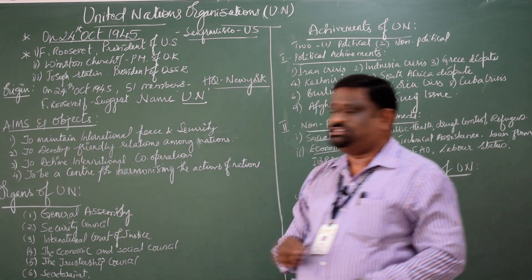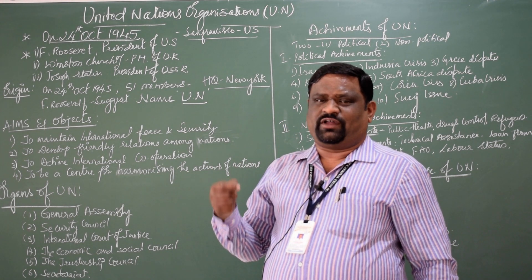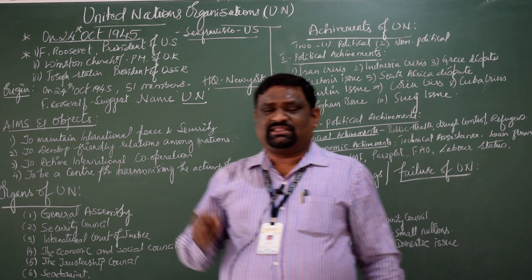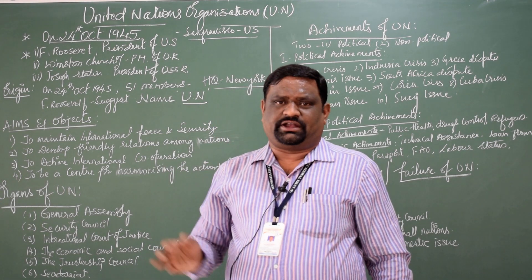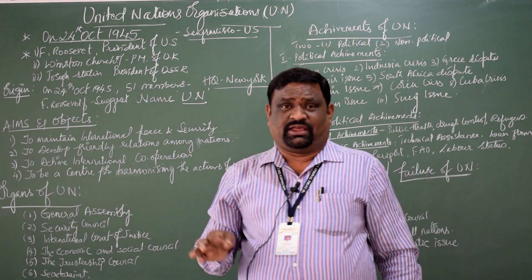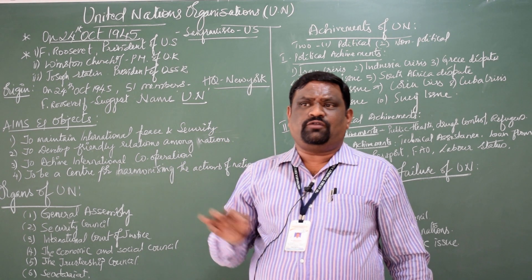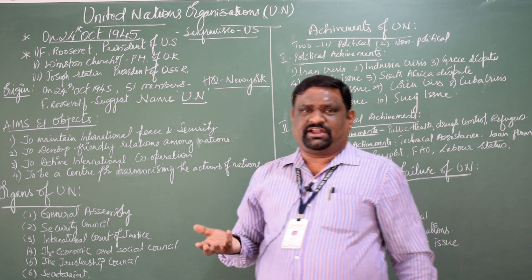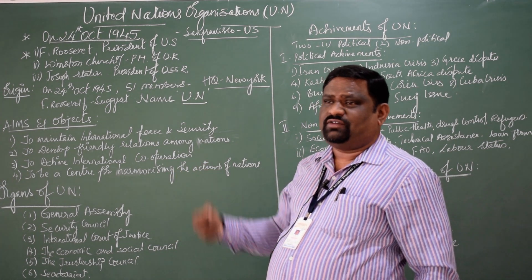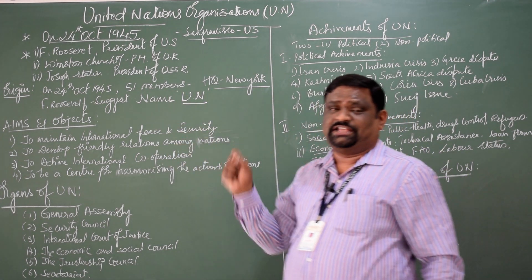Coming to the second objective, to develop friendly relations among the nations: it is not just about signing an agreement saying we are all friends, but also very important to maintain that friendly relationship between all member countries. Today we have 192 countries in the UN. Among these countries they have some disputes and ideological issues, but still we are all friends, sharing technical assistance as well as financial assistance among all member countries. This shows that the UN is still promoting a friendly nature among member countries.